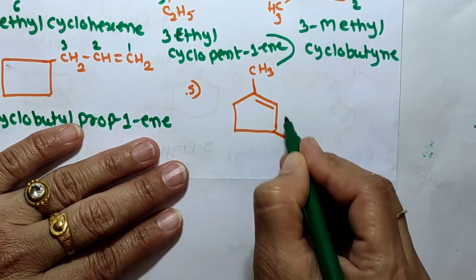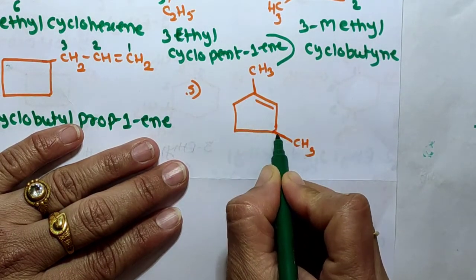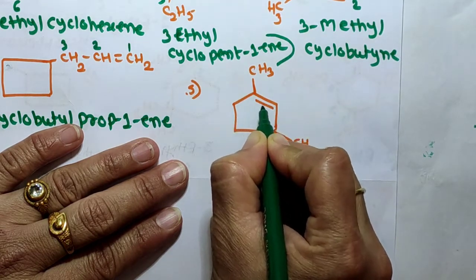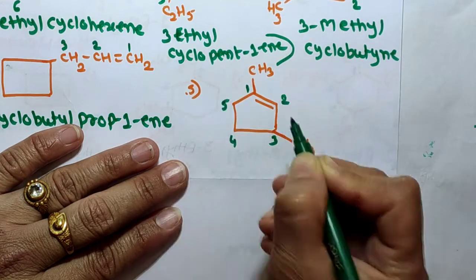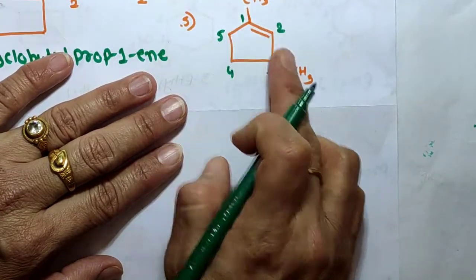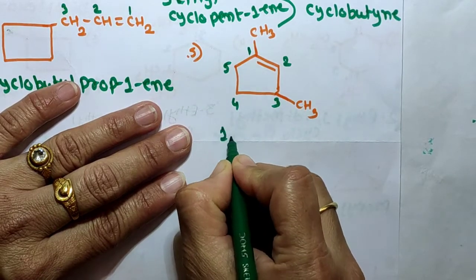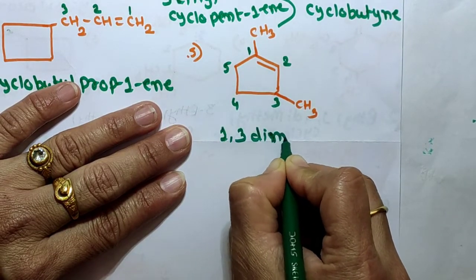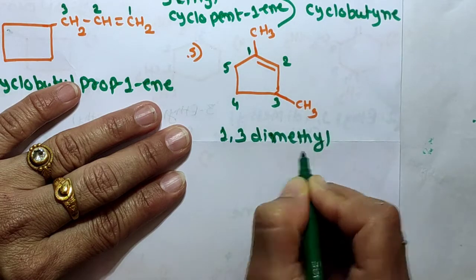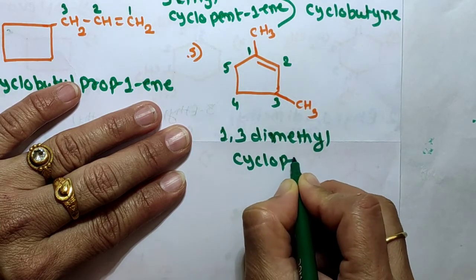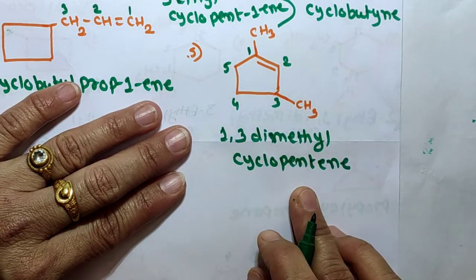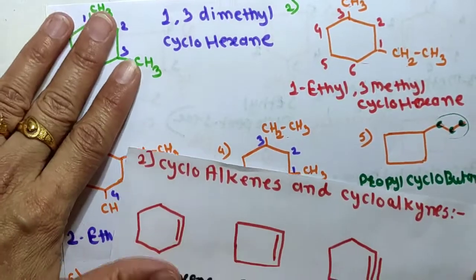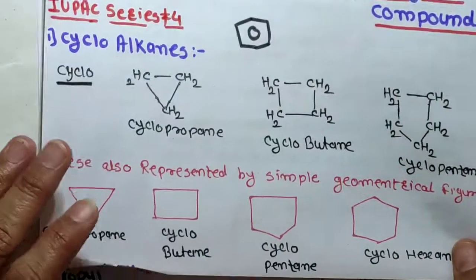Next: cyclopentene with methyl groups at positions 1 and 3. Numbering starts from the double bond: 1, 2, 3, 4, 5. We name the substituents — methyl groups at positions 1 and 3 — giving 1,3-dimethyl. The full name is 1,3-dimethylcyclopent-1-ene, which can also be written as 1,3-dimethylcyclopentene. In this way we can easily name cycloalkanes, cycloalkenes and cycloalkynes.